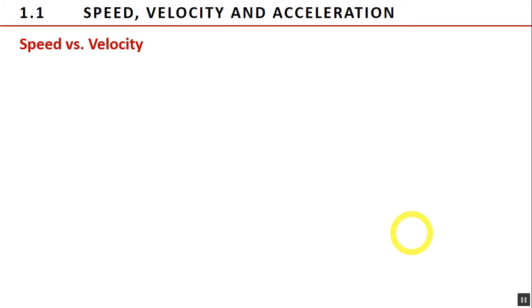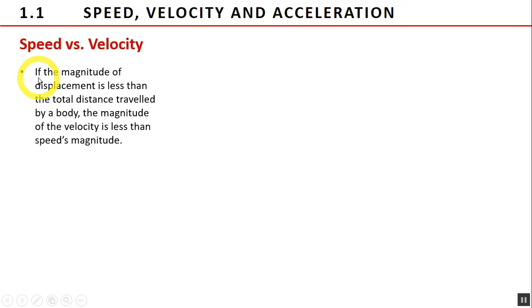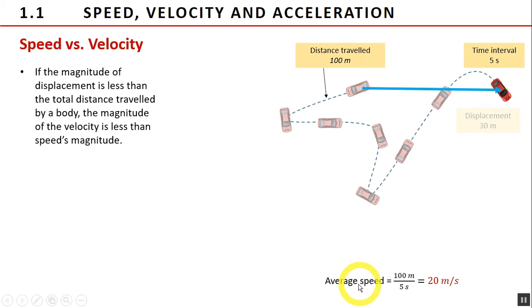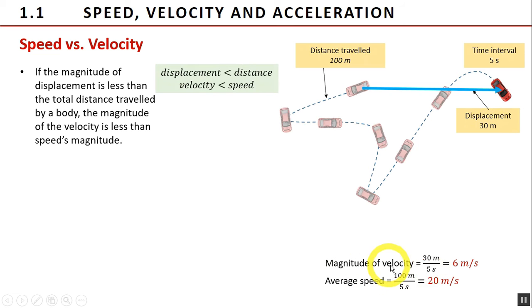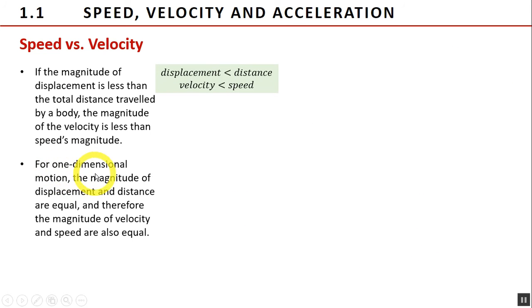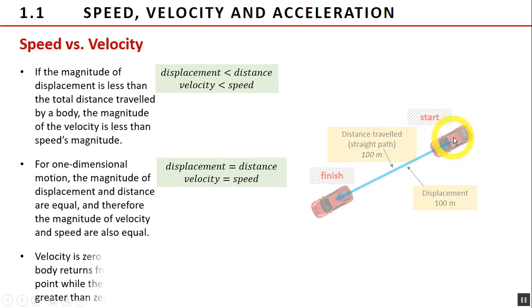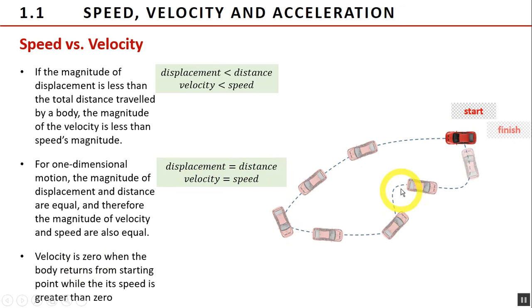Since speed and velocity are related, it is important to note that the magnitude of velocity may be equal to or less than the numerical value of speed. If the magnitude of displacement is less than the total distance traveled, the magnitude of velocity is less than the speed. For example, a car travels 100 meters in 5 seconds — average speed is 20 meters per second — but if the displacement is only 30 meters, the magnitude of velocity is 6 meters per second, less than the speed. For one-dimensional motion, the magnitudes of displacement and distance are equal, so the magnitudes of velocity and speed are also equal. Lastly, velocity is zero when the body returns to its starting point, while its speed is greater than zero.